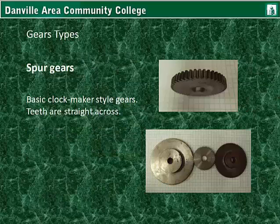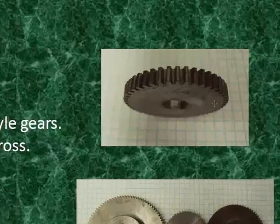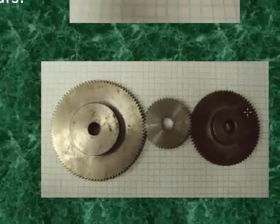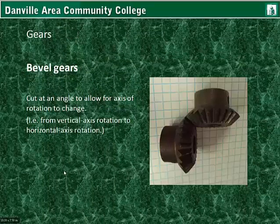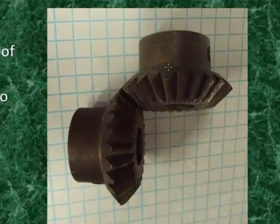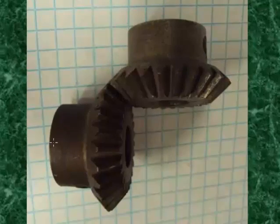There are spur gears, which are the basic clockmaker-style gears — the teeth are straight across. Bevel gears are cut at an angle to allow for the axis of rotation to change — in other words, from a vertical axis rotation to a horizontal axis rotation.